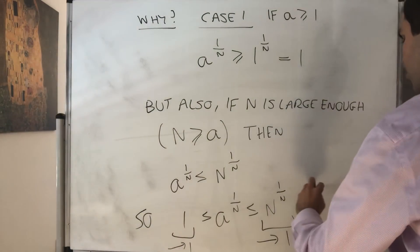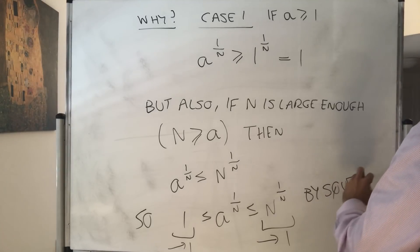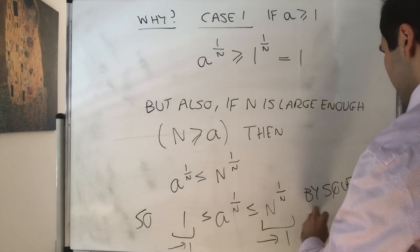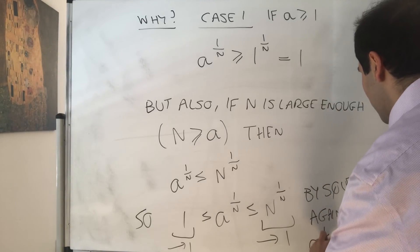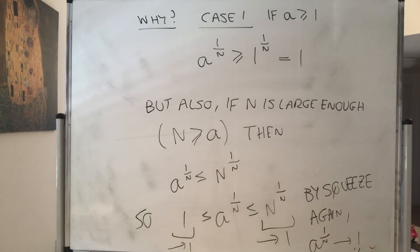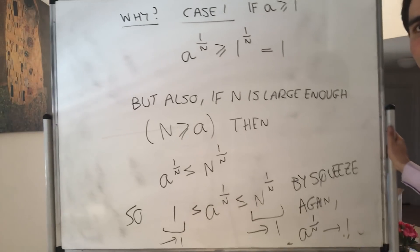So by the squeeze theorem again, we then get a to the 1 over n goes to 1, which is exactly what we wanted to show. So yeah. That was if a is greater or equal to 1.